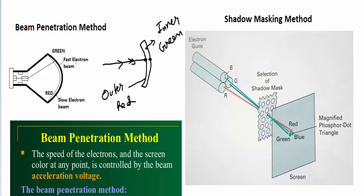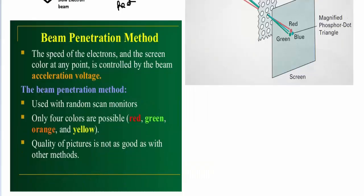The speed of the electrons and the screen color at any point is controlled by the beam acceleration voltage. The beam penetration method is used for random scan monitors, and only four colors are possible: red, green, orange, and yellow. The quality of pictures is not as good as with other methods.